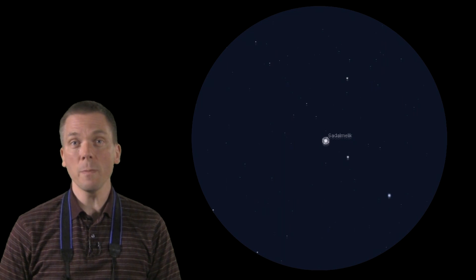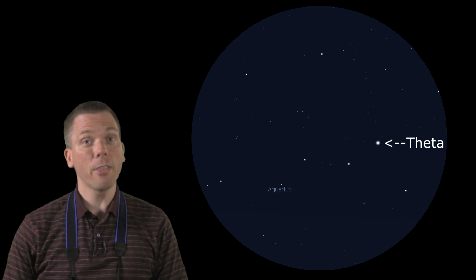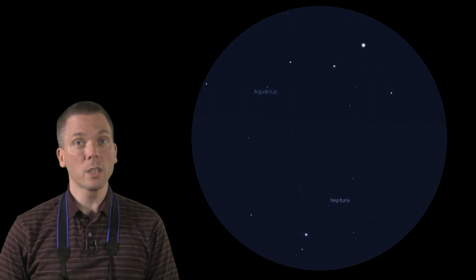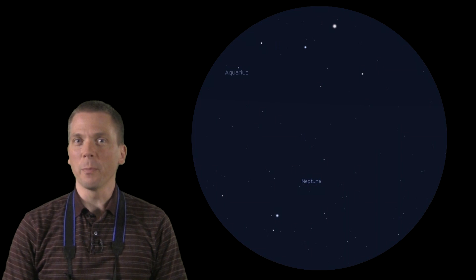Now move in the same direction, almost as far, to 4.2 magnitude theta Aquarii. You'll pass sort of a shovel shaped set of stars here, then a small grouping of three stars including theta here. Continue on, but leave theta at the edge of your field of view. Sigma Aquarii should be visible to one side of that field now. From there, follow the previous directions to locate the planet.